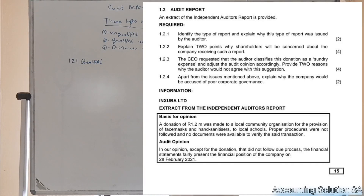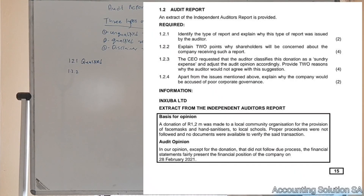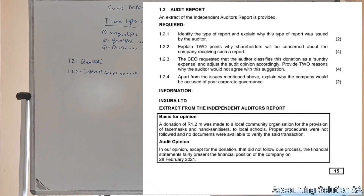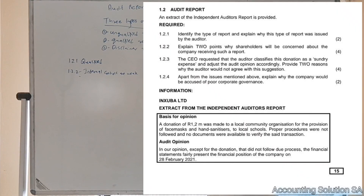Question 1.2.2: Explain why shareholders would be concerned about the company receiving such a report. Obviously the shareholders will be concerned about the internal controls of the company — the internal controls are weak. They are weak because there are no documents showing the donation. If there were proper internal controls, those responsible for the donation were supposed to have a document proving that the donation was made to the local schools.